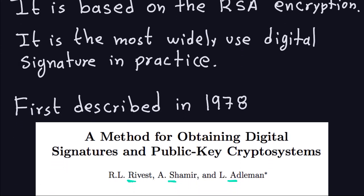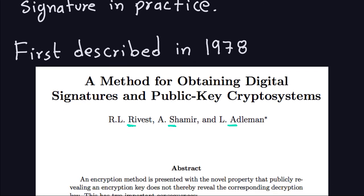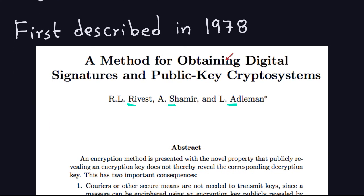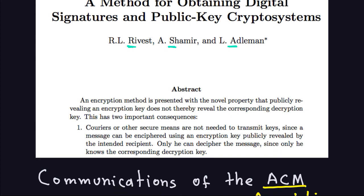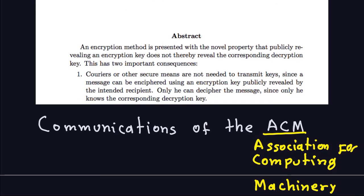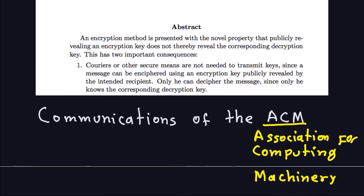It was first described in 1978 in a paper called "A Method for Obtaining Digital Signatures and Public Key Cryptosystems." If you look at the authors of that paper, those are exactly the three people who invented RSA encryption. That paper contains a description of the encryption algorithm together with the digital signature scheme, published in the Journal of Communications of the ACM. This is the historic background about when this digital signature came to be.